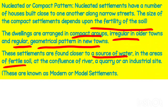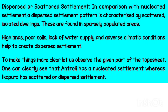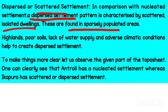In comparison to nucleated settlement, which supports a large number of people, the dispersed settlement — also called scattered settlement — is characterized by scattered or isolated dwellings. These are found in sparsely populated areas, desert areas, or hilly regions.